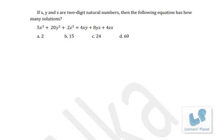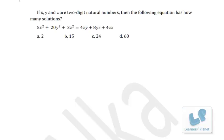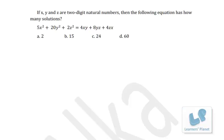If X, Y, Z are two-digit natural numbers, the following equation has how many solutions? This is going to be a somewhat tricky question. What you have to do is think of a way to convert the terms into perfect squares by combining the terms. Here we have 5X², 20Y², 2Z².